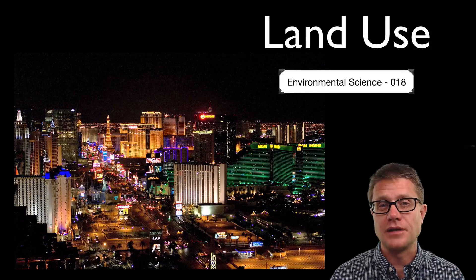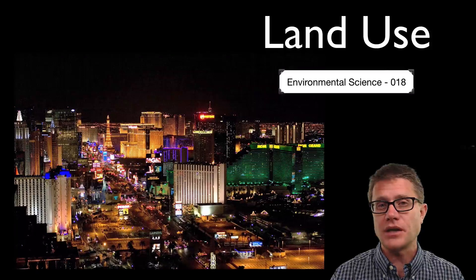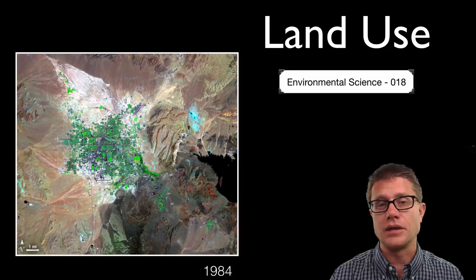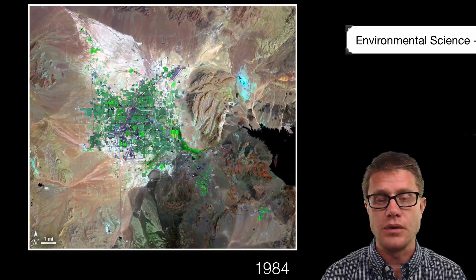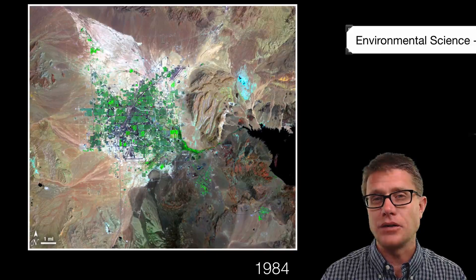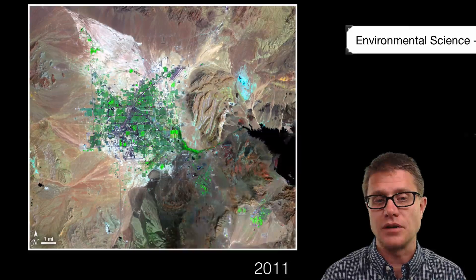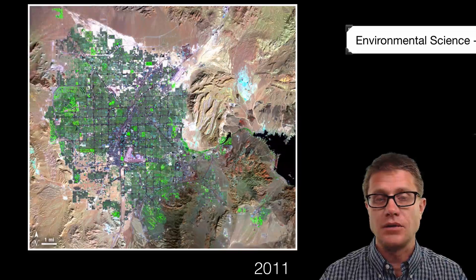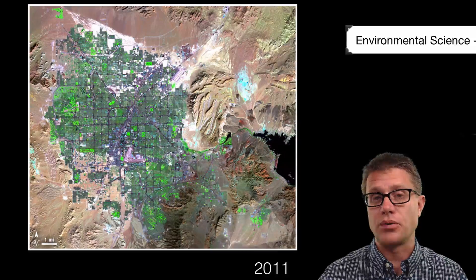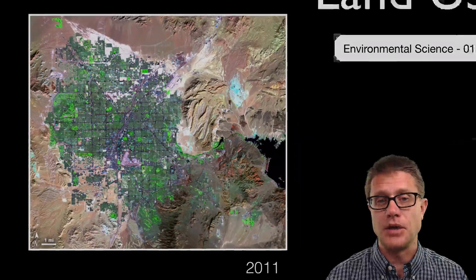You are probably familiar with this skyline — it is the Las Vegas Strip. But it is actually a small portion of the Las Vegas area. This picture was taken in 1984, and now I am going to show you a picture taken in the same location in 2011. Watch what has happened to Las Vegas. We have had huge development into the periphery — we call that urban sprawl, and it brings with it some ecosystem impacts.